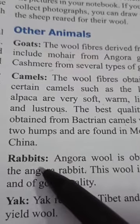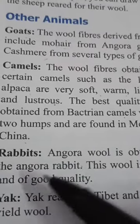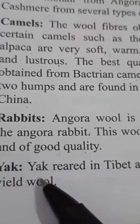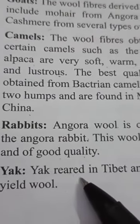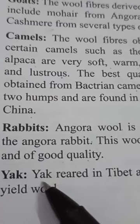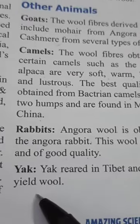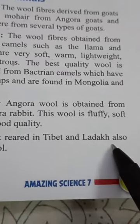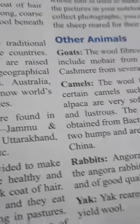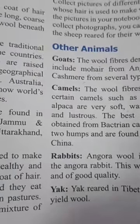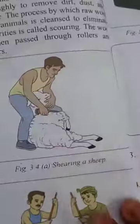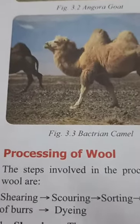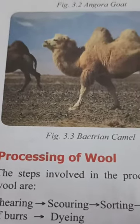The last animal is the yak, which is generally found in snowy, mountainous areas. Yak reared in Tibet and Ladakh also yield wool. Some breeds of yak provide wool that is used for making carpets, blankets, jackets and for stuffing purposes.